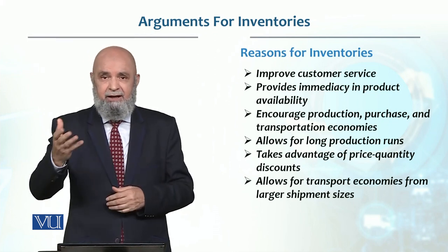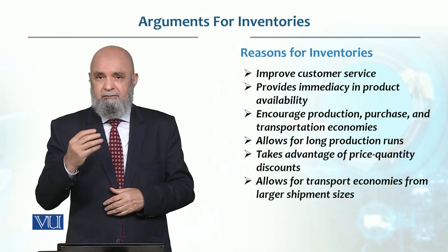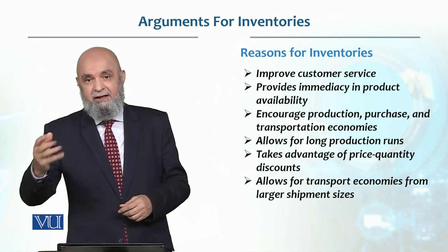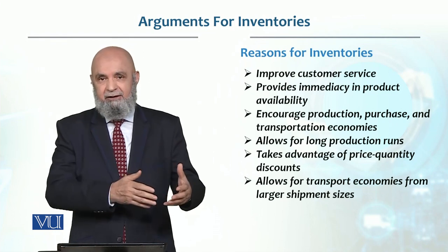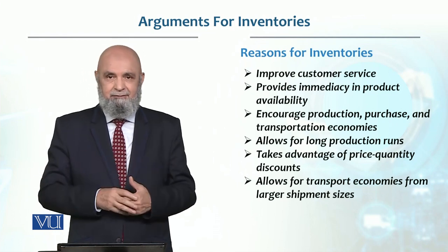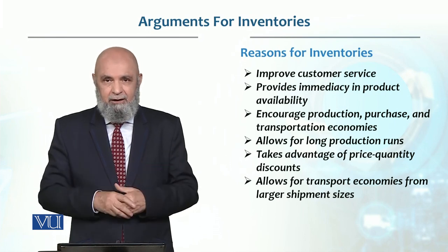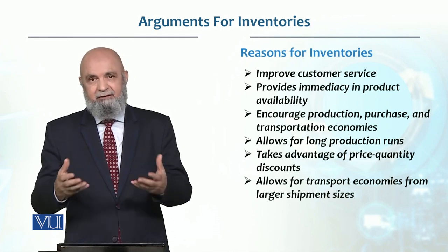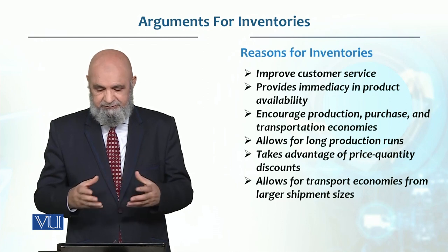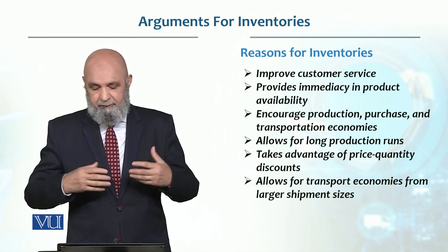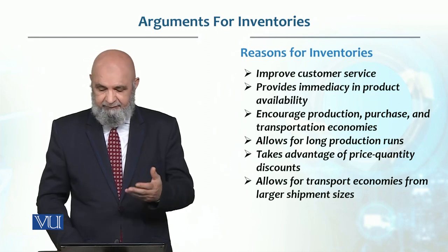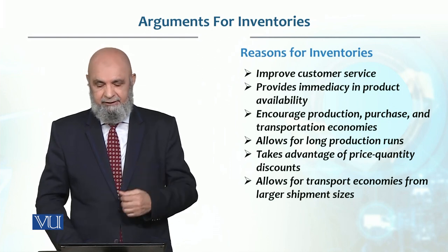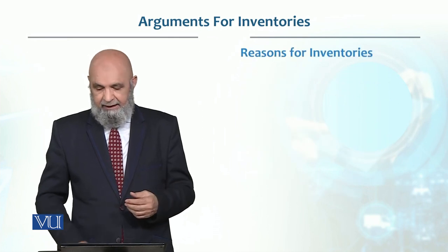If you order one kilo of something, the price will be lower per unit than if you order 10 kilos or one maund. When you pick up larger quantities, the per-unit price decreases. To take advantage of this, larger shipments are made to get discounts and achieve economies of scale, so we order higher quantities.